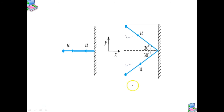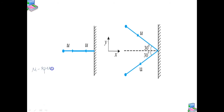The trick is to consider the force on the ball due to the wall using the second law, then use the third law to answer. Let u be the speed of each ball before and after collision with the wall, and m be the mass of each ball.